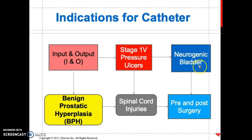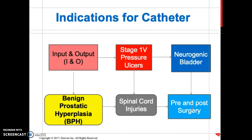Another indication is neurogenic bladder — patients with neurogenic bladder may require insertion of an indwelling or straight catheter. Benign prostatic hyperplasia is another indication. Spinal cord injury patients often have orders for straight catheter to empty the bladder. Pre- and post-procedure is also an indication, as patients going into or coming out of surgery may have an order for Foley catheter insertion.